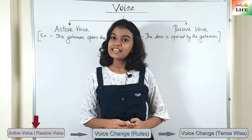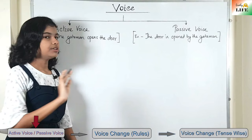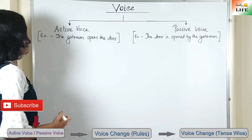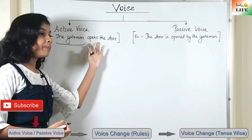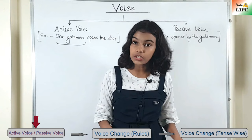What is active voice and what is passive voice? Let's discuss this in detail. First, active voice — let's discuss it with the help of an example: 'The gateman opens the door.' In this sentence, 'the gateman' is the subject, 'opens' is the verb, and 'the door' is the object. Active voice is the voice where the subject is the doer of the action.